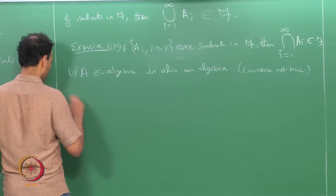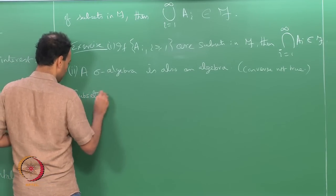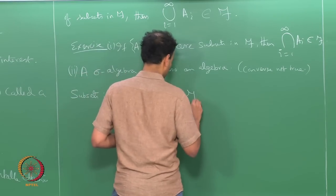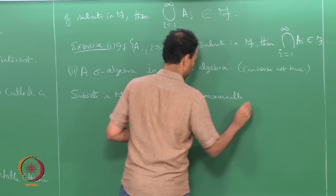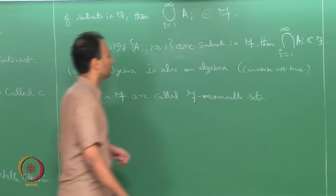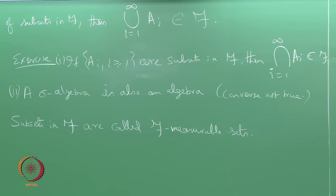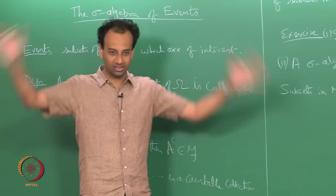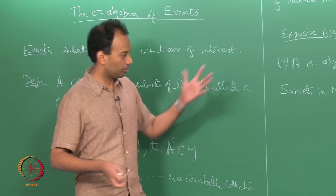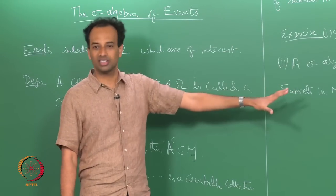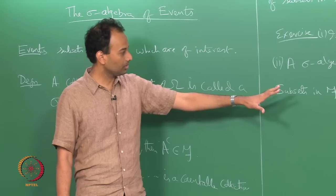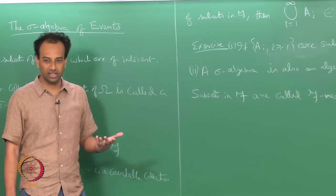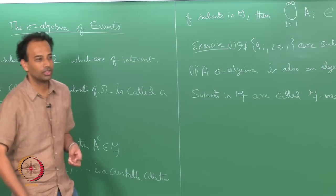Another terminology: subsets in F are called F-measurable sets. So if omega is a sample space and you collect subsets of omega to make a sigma algebra F, then elements of that F are called F-measurable sets. Subsets of omega which are not in F are not called F-measurable sets — they are just some subsets of omega.